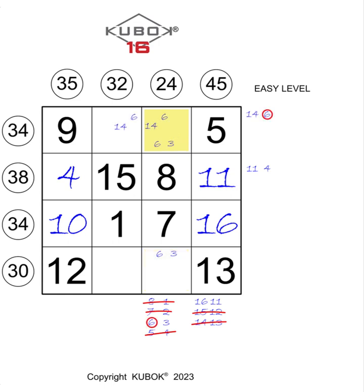Now to understand if 3 or 6 should be written in the first line, we can subtract 9 and 5 from 34. Therefore the sum of the two missing numbers of the first line must be equal to 20.